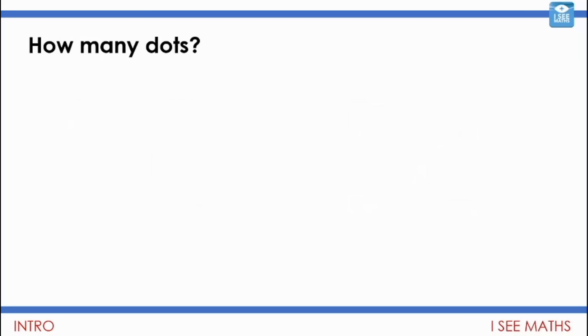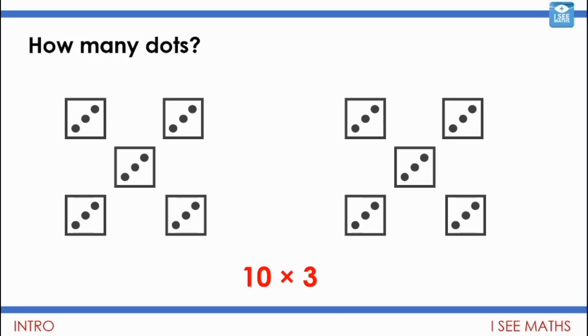Okay, say or write down how many you think you saw. And then when you're ready, let's have a look. How many dots were there? Well there were 10 lots of 3. So that's 30 dots in total. Here comes the next one.